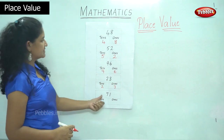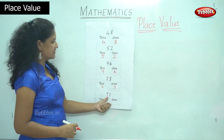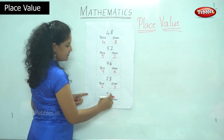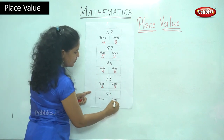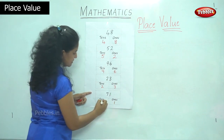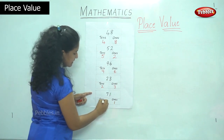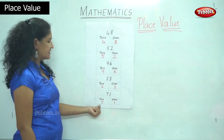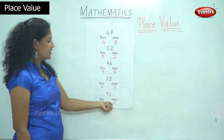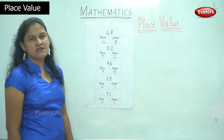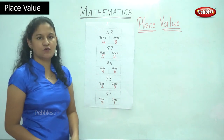The next number is 71. I have 1 in the 1s place and number 7 in the 10s place. So I read the number as 7 10s and 1 1s, or 71.